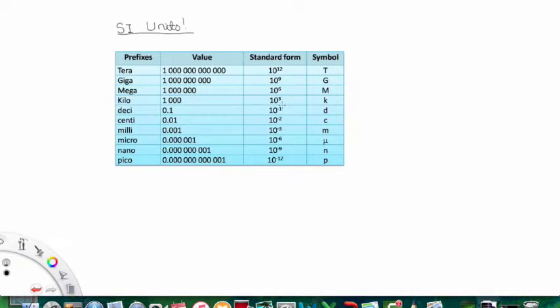Kilo is 10 to the power of 3, like when you talk about kilograms as a mass. Deci is now 10 to the power of negative 1, meaning it's a tenth. Centi is a hundredth. Milli is a thousandth. For example, if you talk about a millimeter, it's a thousandth of a meter. And then we go into the very small values. Ten to the power of negative 6, 9, and 12, which are micro, nano, and pico.